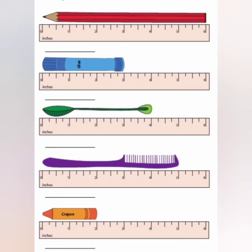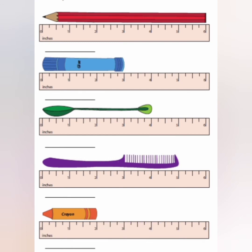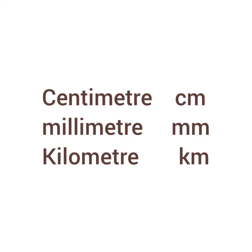First, let us see how to measure length. Length is the measure of an object from one end to the other end. You can see some things placed on a scale to measure their length. The standard unit of length is meter. The other units are centimeter, millimeter, and kilometer.